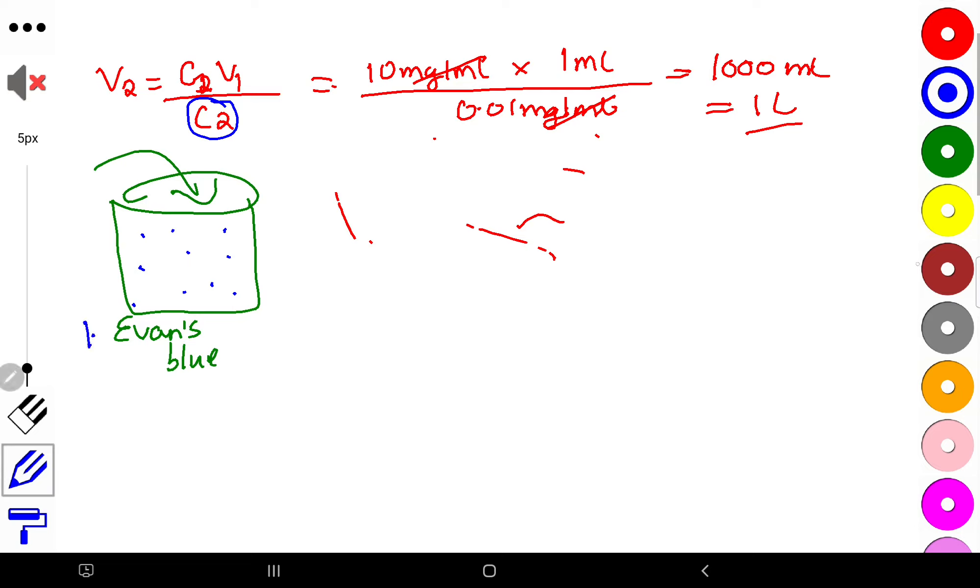The second one is one that goes into the plasma, but it has the ability to go into the interstitium. So this one is known as bromine. So with bromine, you're able to calculate, then after you get your C2, your C2 will be representative of all the fluid from the plasma to the interstitium. So this is the ECF. So you're able to calculate the extracellular fluid.